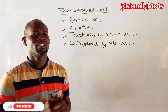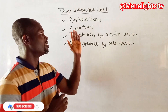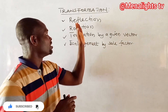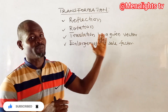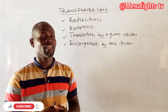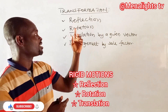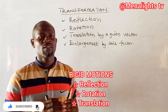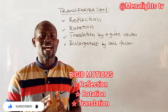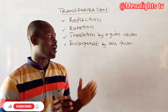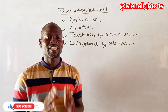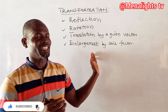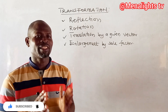Welcome once again to Manalize TV. Today we are looking at transformations, and under this topic we have four subtopics: reflection, rotation, translation by giving a vector, and enlargement by scale factor. Reflection, rotation, and translation by giving a vector are called rigid motions, because whatever you do to them, the size and shape of the figure will not change. With enlargement by scale factor, the size of the object may change, which is why it is not part of the rigid motions.